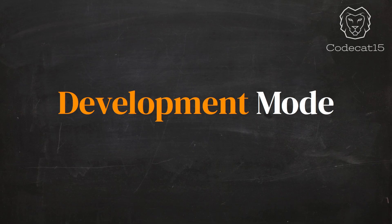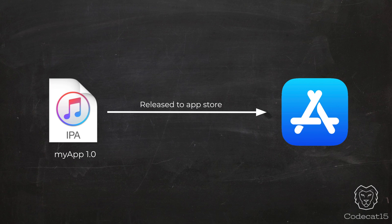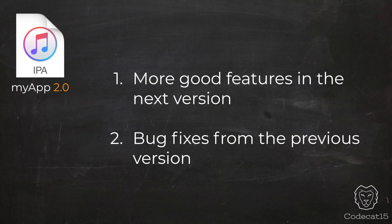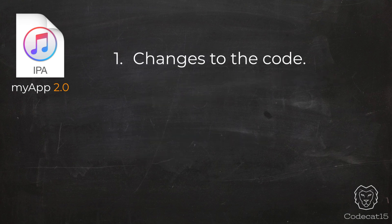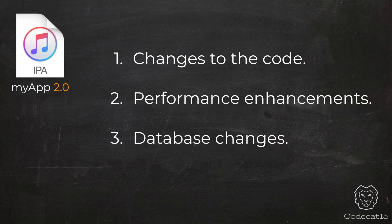In development mode, there are no changes in the application, so we can easily perform those changes without worrying about anything. But when your application is released on the App Store and people start using it, the story is not finished. You want to add more good features and probably some bug fixes. To improve your application in the next version, you make code changes, improve performance, and if your application is using a database, you will also need to make changes in the database.